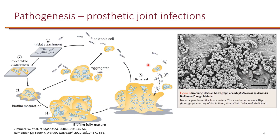There are several steps in the life cycle of a biofilm. Planktonic cells are essentially the bacteria that flow in the environment — this environment could be the host, for example the blood. The first step is for these bacteria to attach to a foreign object, oftentimes foreign hardware in the host. They can also do this occasionally with bone.